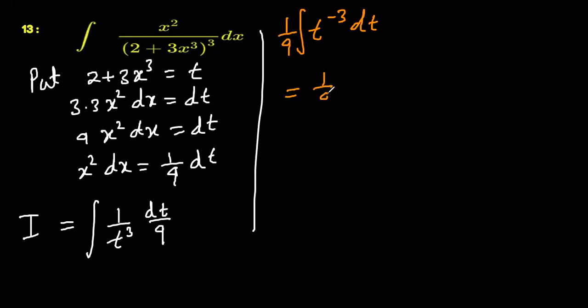1 by 9 as it is, and using integration of x to the power n, so this is t to the power minus 3 plus 1, divided by minus 3 plus 1, and plus c.